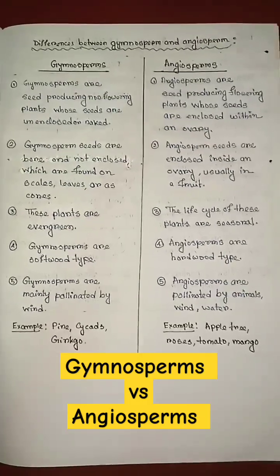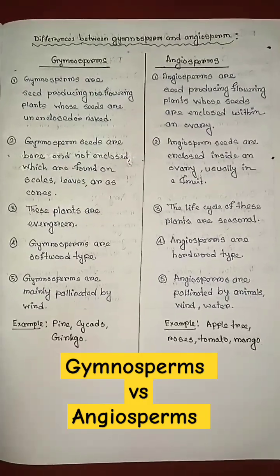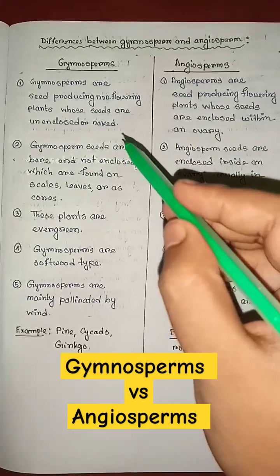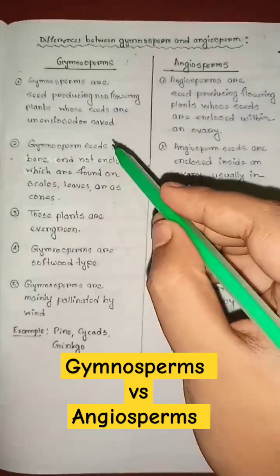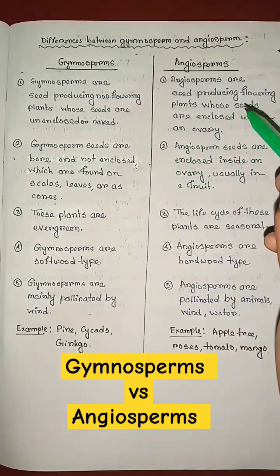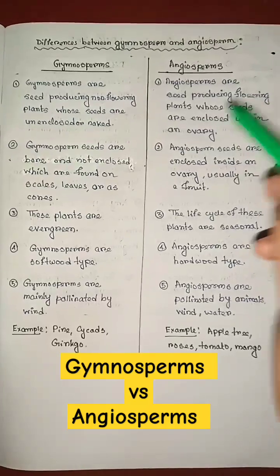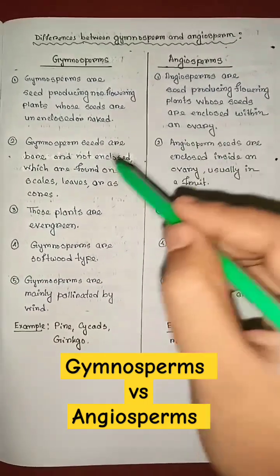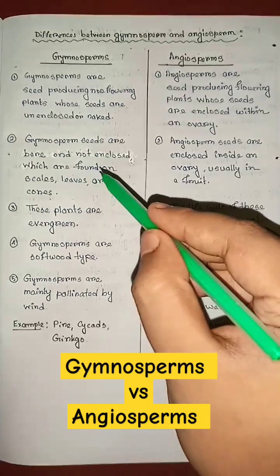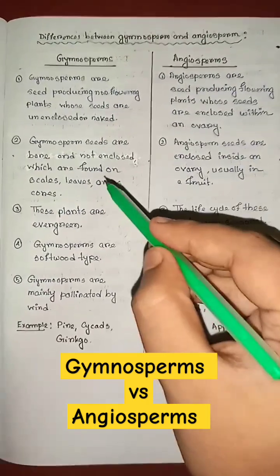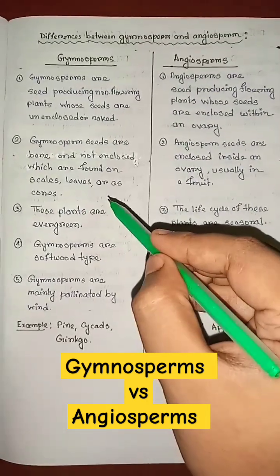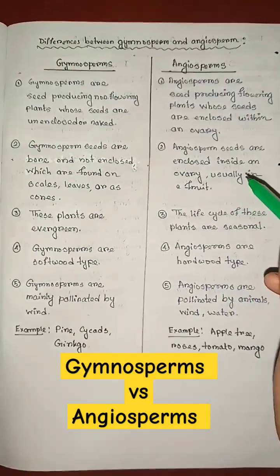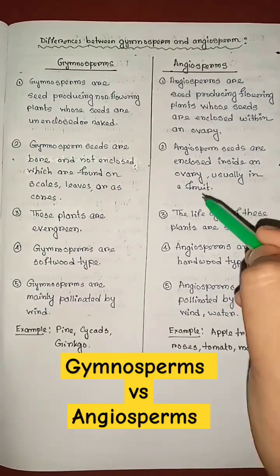Differences between gymnosperms and angiosperms: gymnosperms are seed-producing non-flowering plants whose seeds are unenclosed or naked, but angiosperms are seed-producing flowering plants whose seeds are enclosed within an ovary. Gymnosperm seeds are bare and not enclosed, found on scales, leaves, or as cones. Angiosperm seeds are enclosed inside an ovary, usually in a fruit.